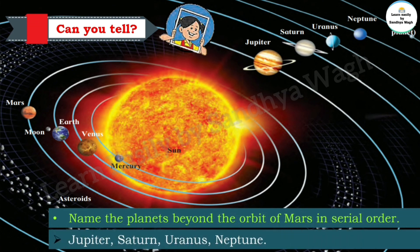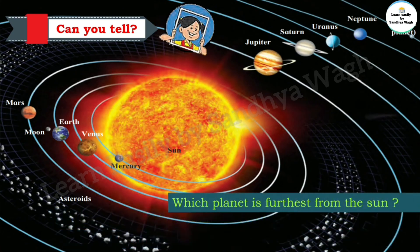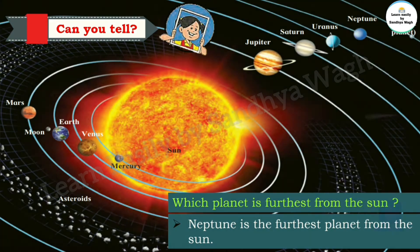Jupiter, Saturn, Uranus, Neptune. Which planet is farthest from the sun? Yes, very good — Neptune. Neptune is the farthest planet from the sun.